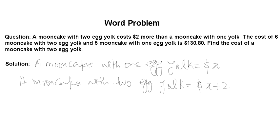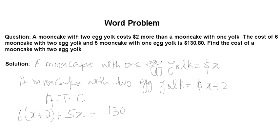Now let's re-read the question. A moon cake with two egg yolks costs two dollars more than one with one egg yolk — done. It also says the cost of six moon cakes with two egg yolks and five moon cakes with one egg yolk is $130.80. According to this condition: six times (x + 2), because the price of one moon cake with two egg yolks is x + 2, plus five times x equals $130.80.